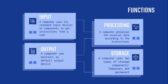Input: a computer uses its standard input device or components to get instructions from a user. Processing: a computer processes the received data according to the instructions. Output: a computer uses a monitor as the default output device. Storage: a computer uses two types of storage components — temporary and permanent.